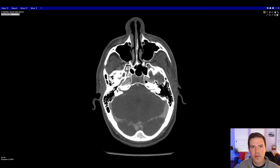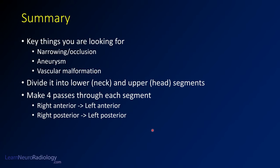That's basically all you need to look at for your CTA of the head and neck. In summary, we've taken a look at the general approach to a CT angiogram of the head and neck. It's good to have an idea of what you're looking for — narrowing or occlusion, aneurysm, or vascular malformation. Divide it into segments: lower neck and upper head. Take four separate passes, going from anterior to posterior and then right to left, so that you're seeing all of the vascular structures.